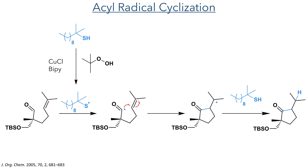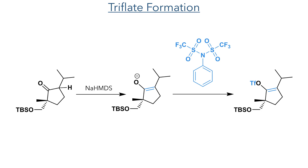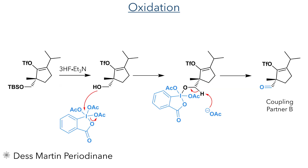The selectivity of this radical cyclisation is governed by Beckwith's rules, which we looked at in detail in the video 'Rules for Ring Closure.' To form the triflate necessary for the Utimoto coupling, the enolate was first formed using sodium HMDS, which was reacted with bis(trifluoromethanesulfonyl)aniline to form the alkene triflate. The TBS group was then deprotected using HF, and the newly revealed hydroxyl group was oxidised using Dess–Martin periodinane, which acts as a nucleophile towards the hypervalent iodine centre, making it more electrophilic and allowing deprotonation by the eliminated acetate group to generate the target aldehyde and complete the synthesis of coupling partner B.